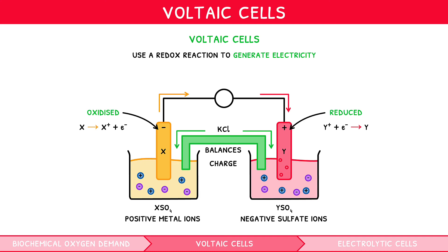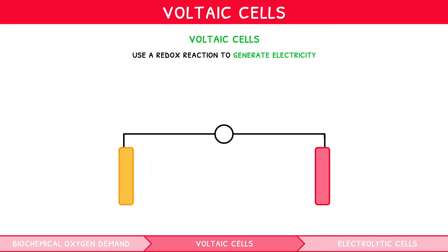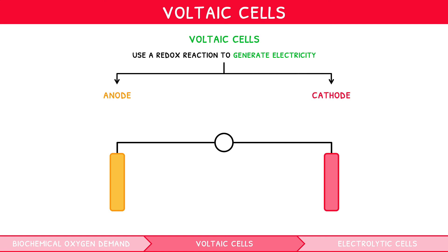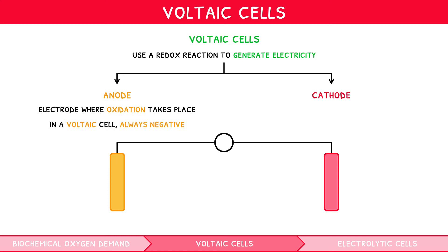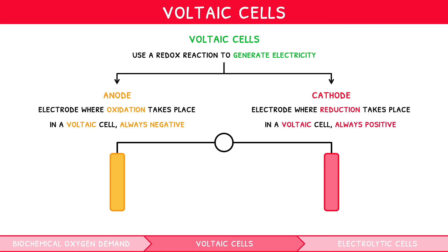Two very important terms used for all electrochemical cells are the anode and cathode. The anode is the electrode where oxidation takes place, and in a voltaic cell is always the negative electrode. The cathode is the electrode where reduction takes place, and in a voltaic cell is always the positive electrode. This can be remembered using the mnemonic 'an ox-red cat': anode undergoes oxidation, and reduction occurs at the cathode.